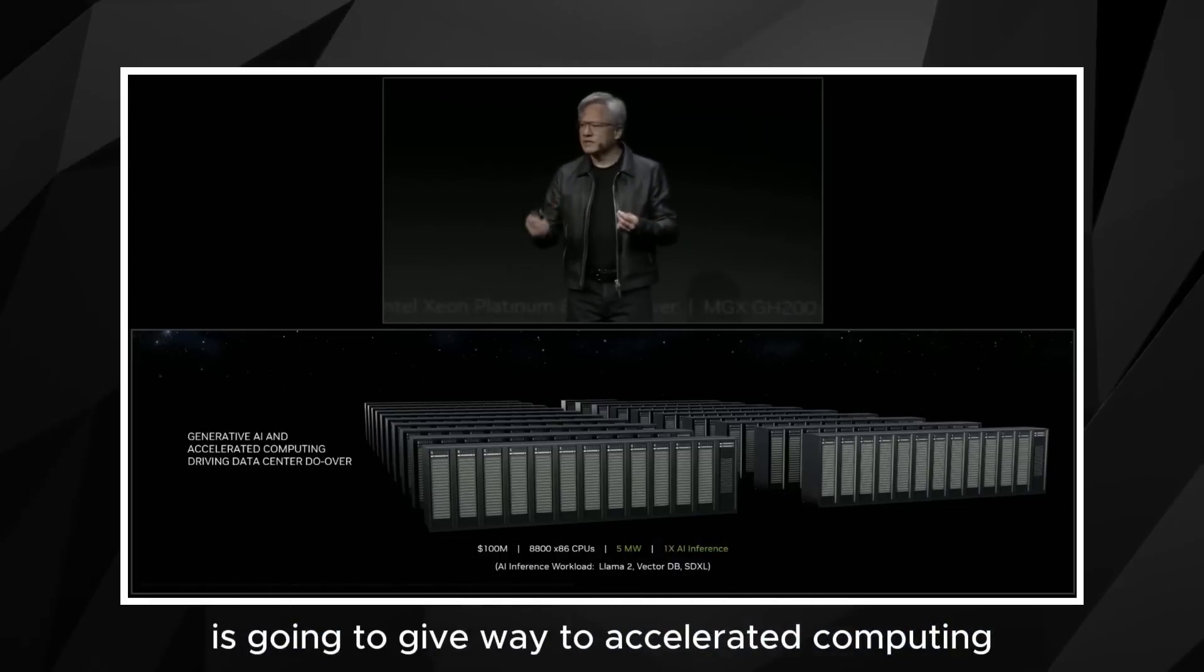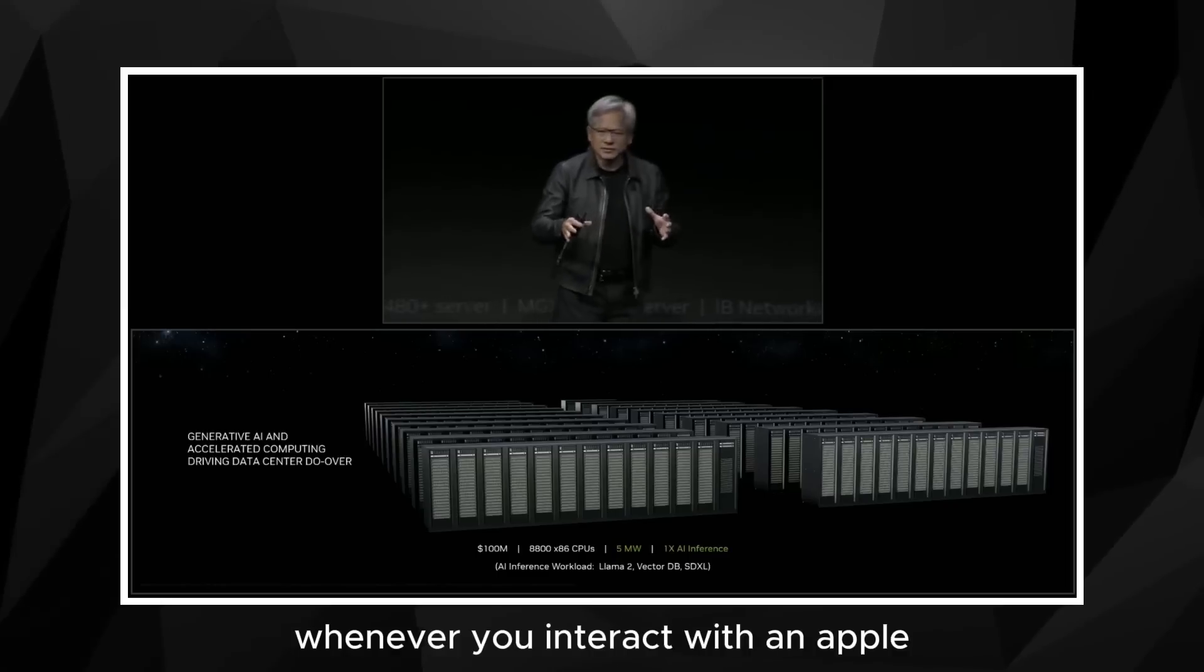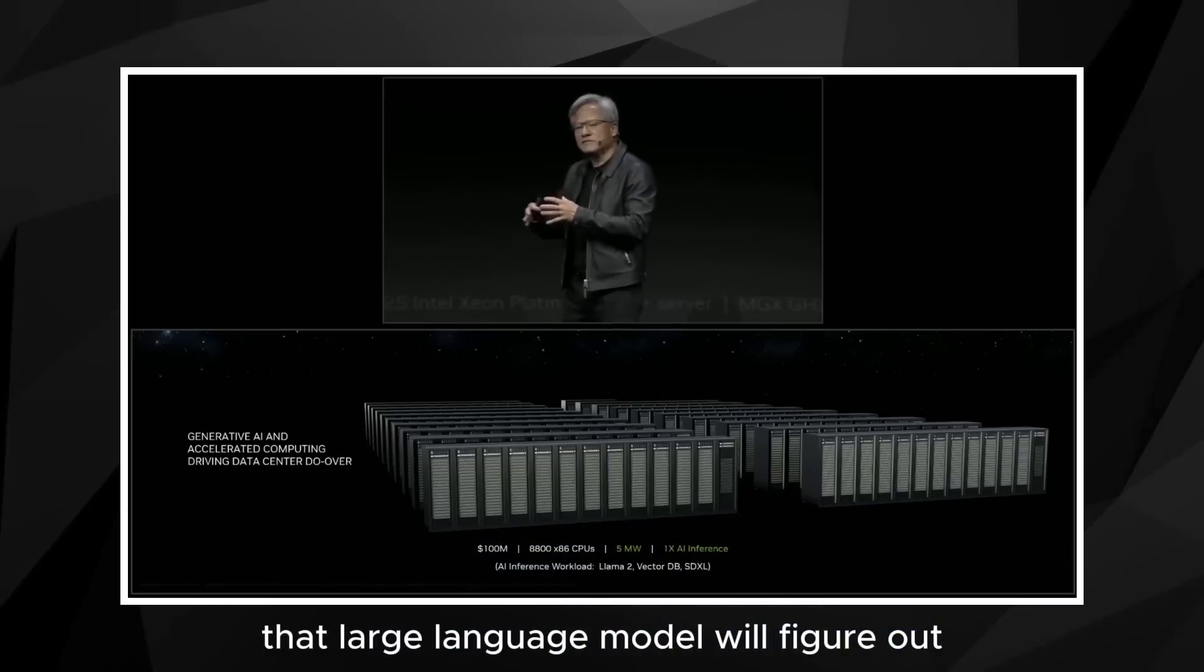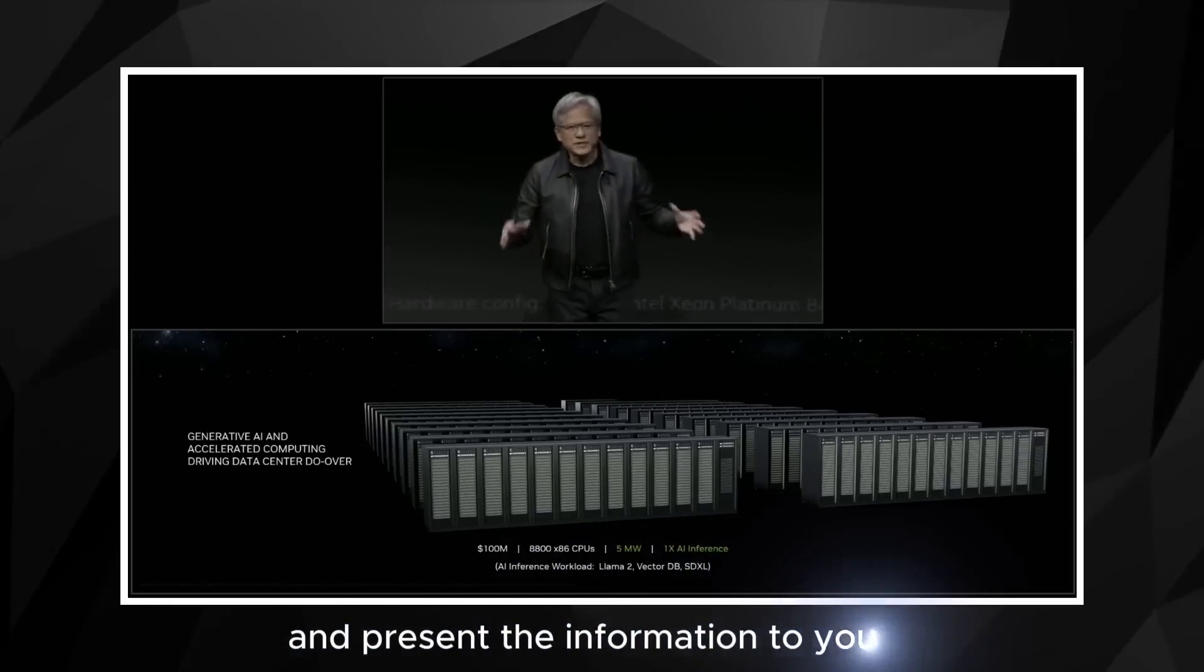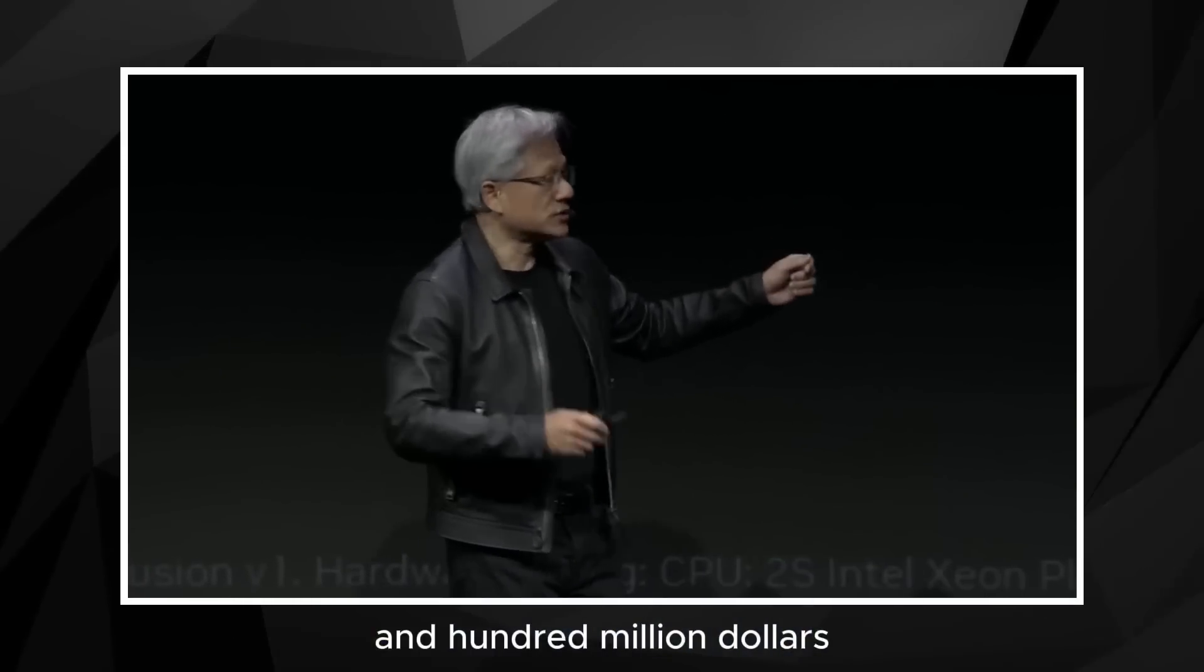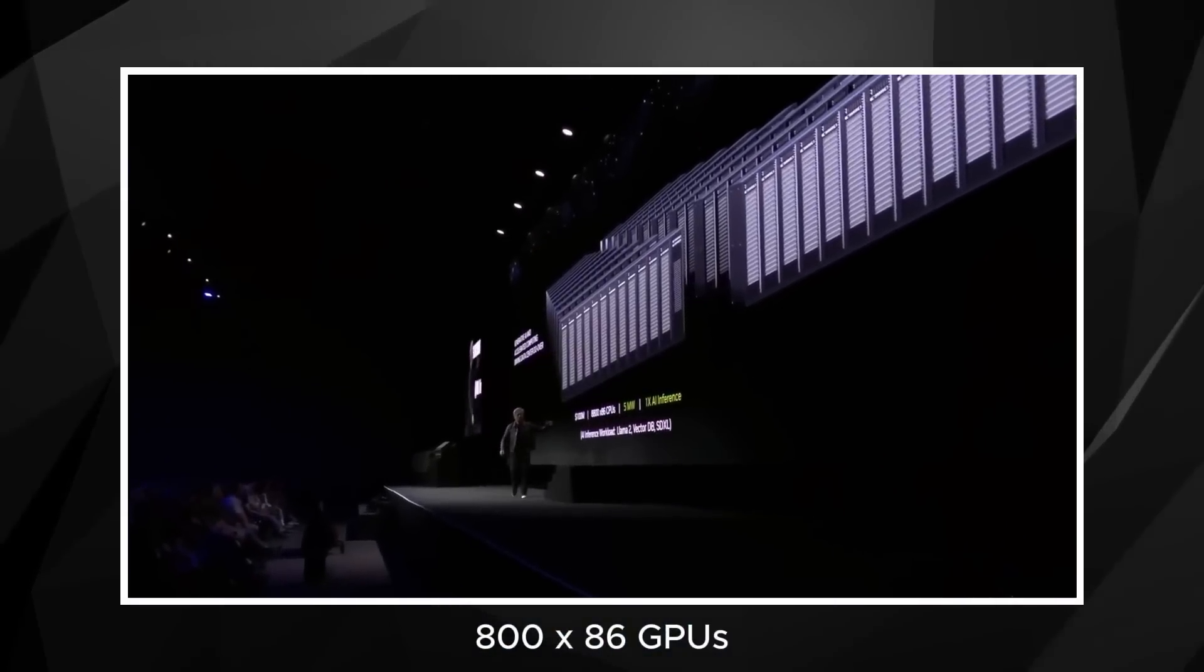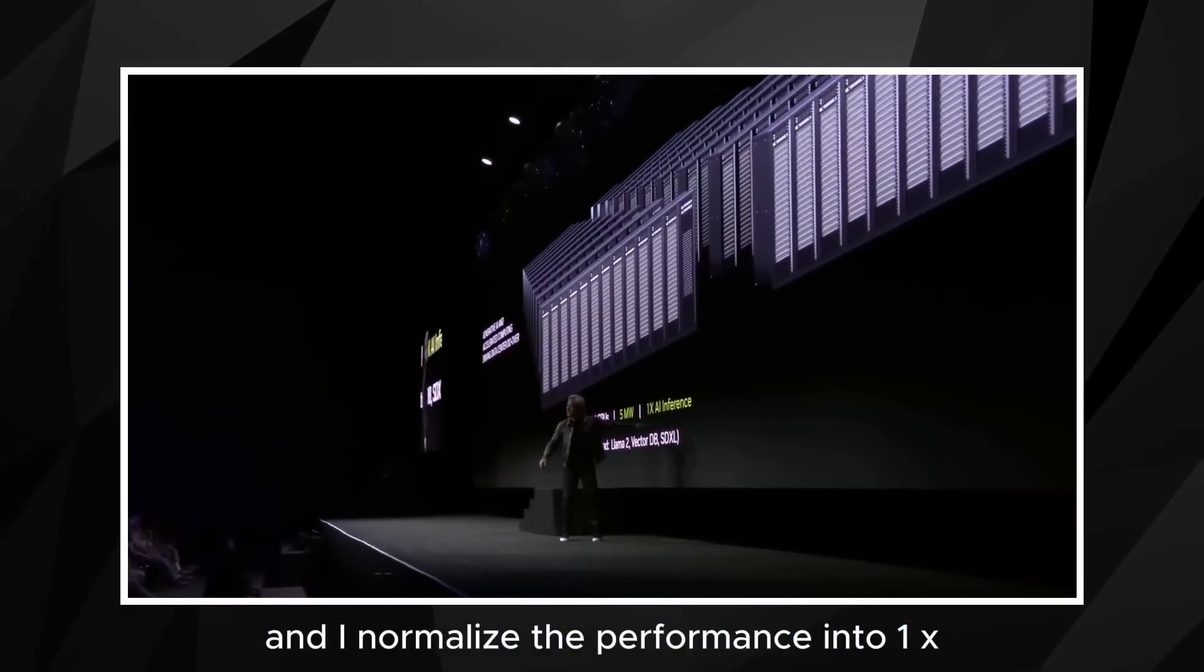General purpose computing is going to give way to accelerated computing and AI computing. Every single application, every single database, whenever you interact with a computer, you'll likely be first engaging a large language model. That large language model will figure out what is your intention, what is your desire, what are you trying to do given the context and present the information to you in the best possible way. Well, if you were to have an ISO budget way of processing that workload, it would take, let me just choose a number, $100 million, and $100 million would be a reasonably small data center these days. $100 million would buy you about 8800 x86 GPUs. It would take about 5 megawatts to operate that and I normalize the performance into 1x.